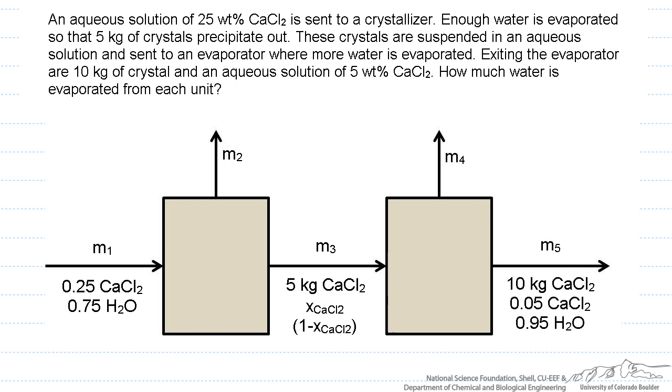So they're sent to an evaporator where more water is evaporated, and exiting the evaporator are 10 kilograms of crystals, and 5 weight percent aqueous solution. And we don't know what the flow rate of this is. And how much water is evaporated from each unit, what we're asking for is what is m2 and m4.